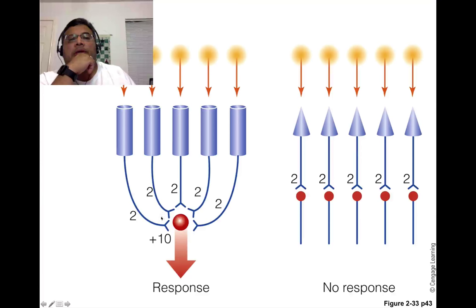This increases your sensitivity to light, but it decreases your visual acuity. Because instead of having one cell per pixel or per dot, you have basically five cells that are all looking for the same spot.